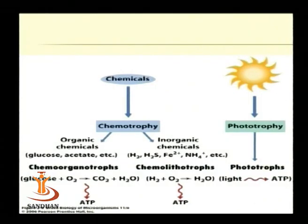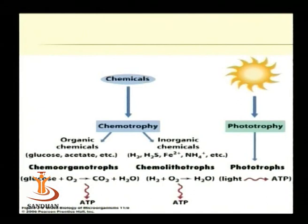This is the basis of chemotrophy as well as phototrophy. Chemical compounds that can be utilized can be organic compounds or inorganic compounds, and accordingly we may classify bacteria as chemo-organotrophs or chemolithotrophs.